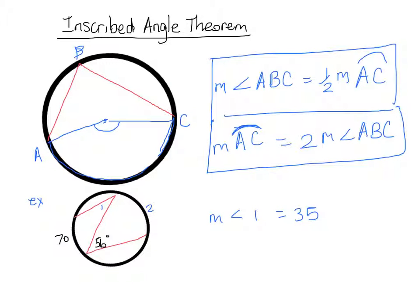On the other side of the circle, I've given you the inscribed angle and asked for the measure of the intercepted arc. We know that the intercepted arc is twice the measure of the inscribed angle, which means the measure of arc 2 is equal to 56 times 2, which gives us 112 degrees.